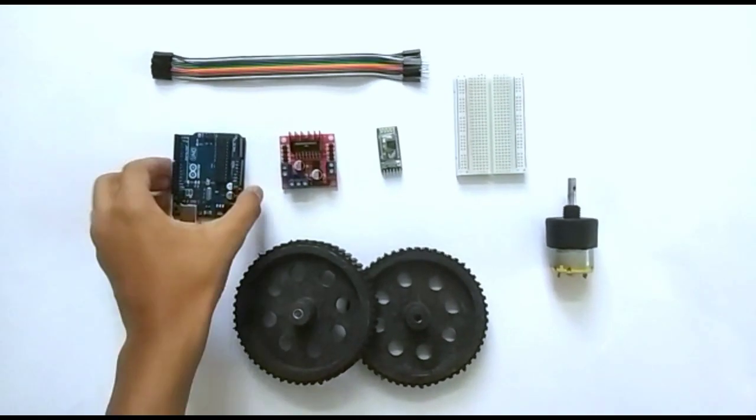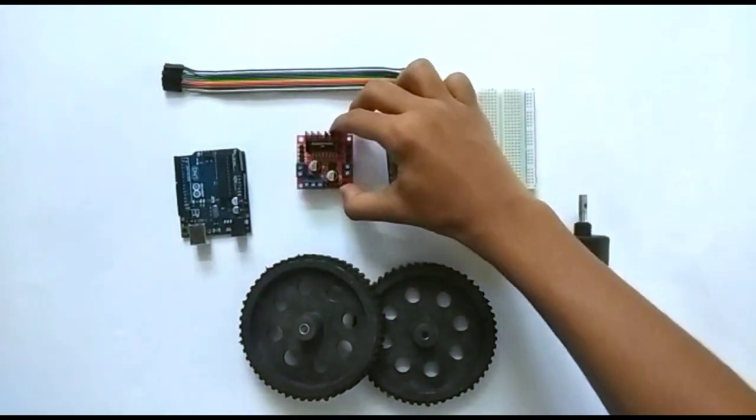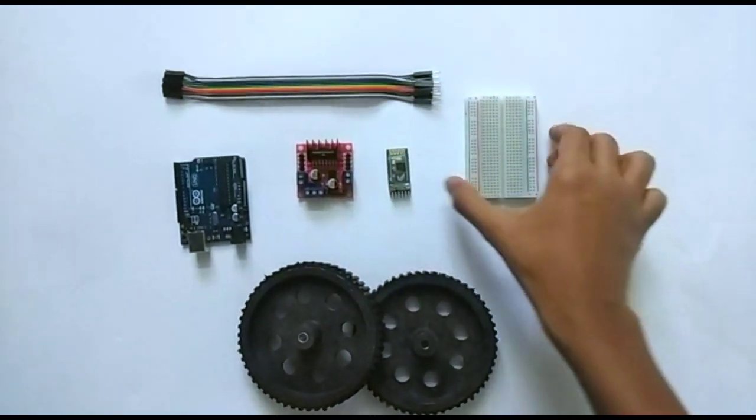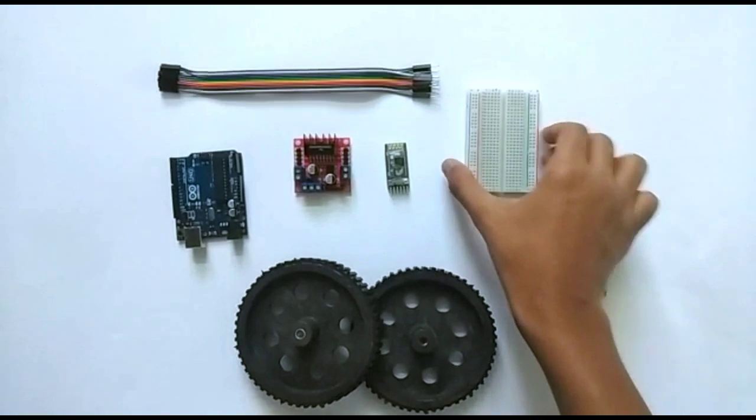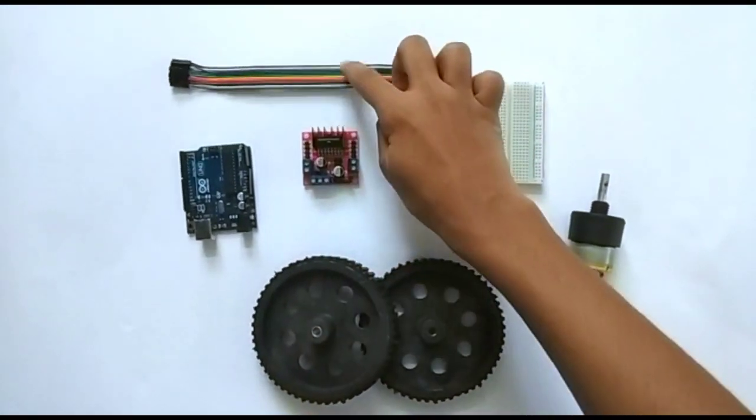The materials required are an Arduino Uno, a L298N motor driver, a bluetooth module, a mini breadboard, a 60rpm motor, 6 wheels and some jumper wires.